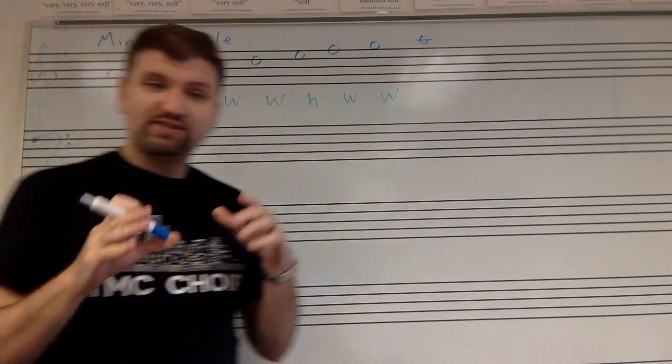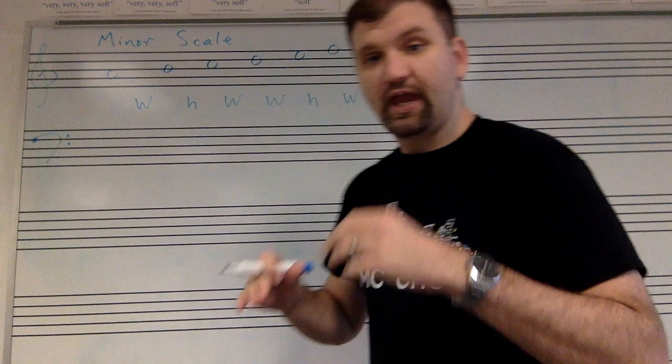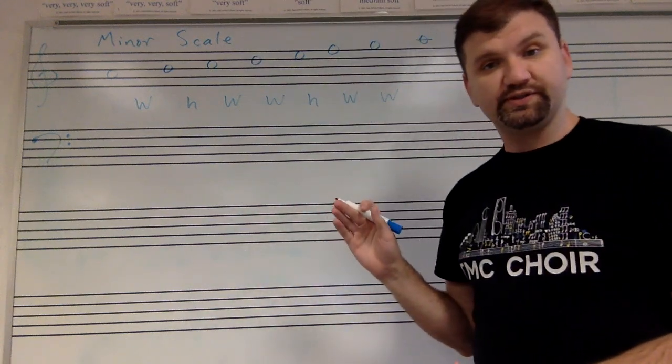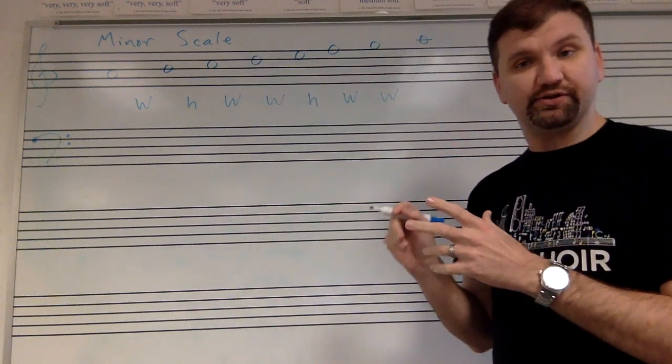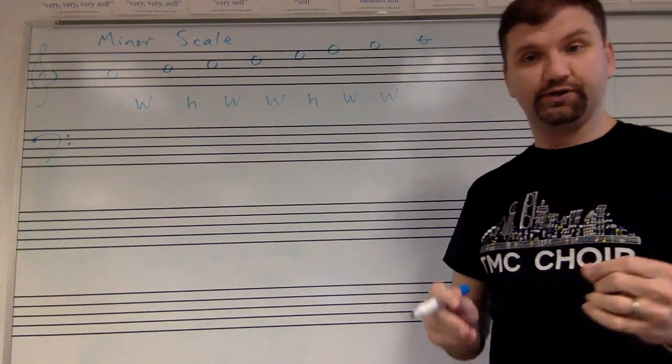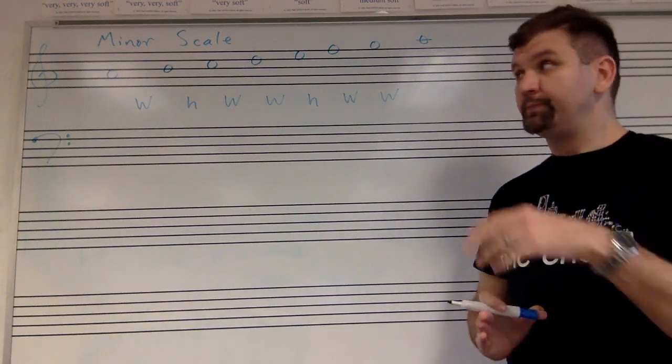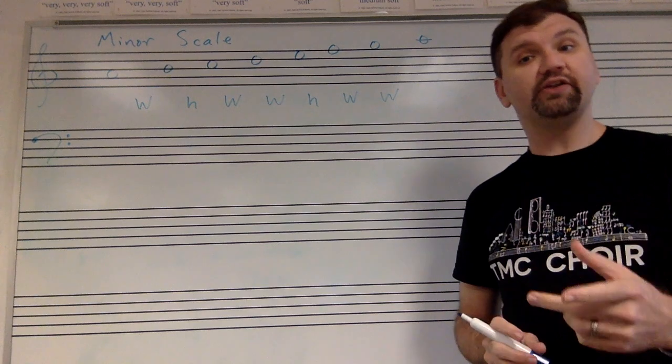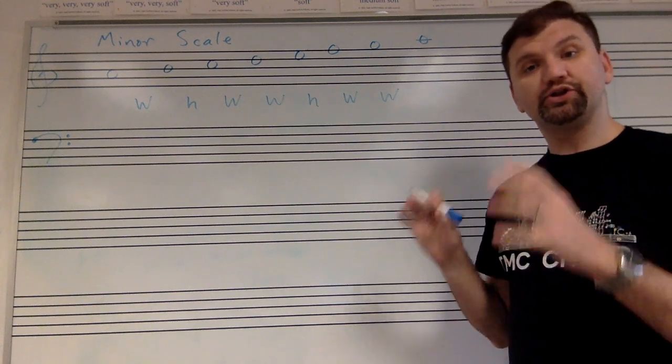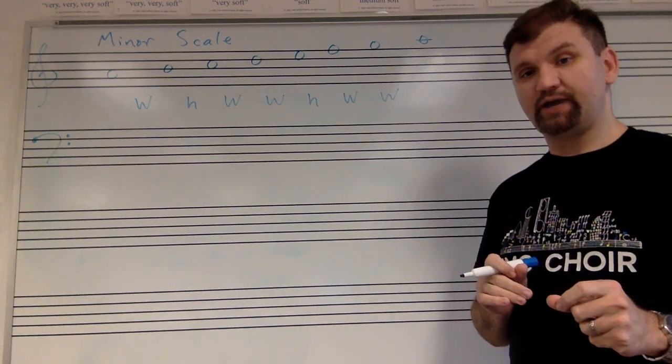So just like the C major scale had all natural notes, the A minor scale has all natural notes. And that's unique about both of those scales. Any other major scale, any other minor scale, will require sharps and flats to produce the same pattern.